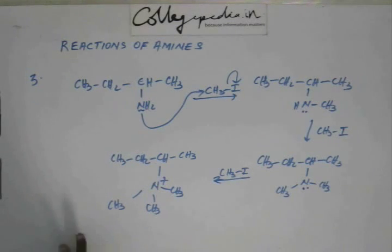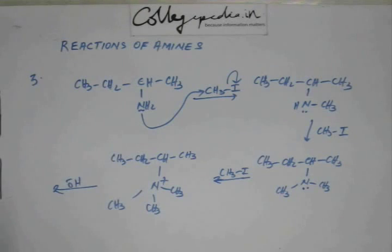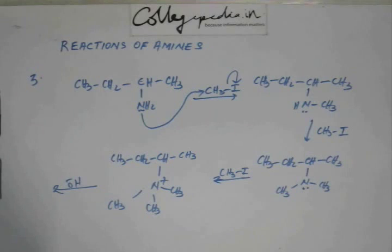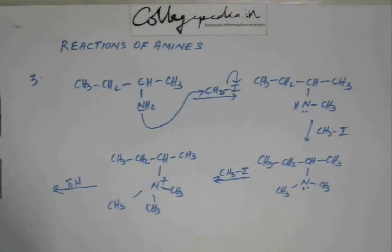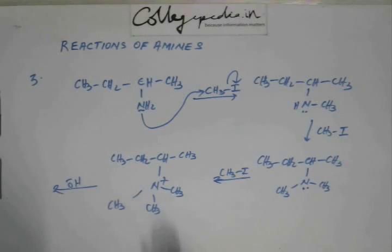Now when we have reached a quaternary ammonium ion like this, at this stage if I am adding a base, we have to see what will happen. When you hear of a base, you understand it is going to abstract hydrogen — that's what a base is by definition. Base is going to abstract a hydrogen such that whatever is left behind is stable. As such, there is no acidic hydrogen here because there is no hydrogen attached to a more electronegative atom like oxygen, nitrogen, or chlorine — all are carbon. So we don't find an acidic hydrogen, but something will happen and there could be elimination.